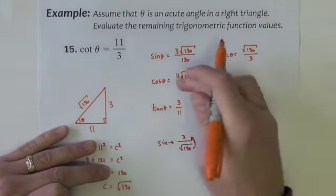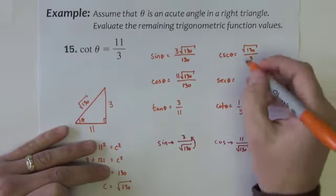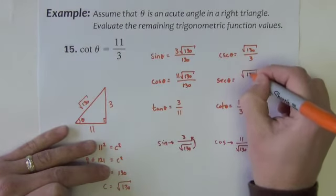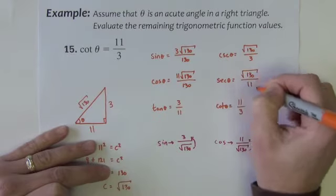For the secant I need the reciprocal of this or the reciprocal of this form, which is easier to write: square root of 130 over 11.